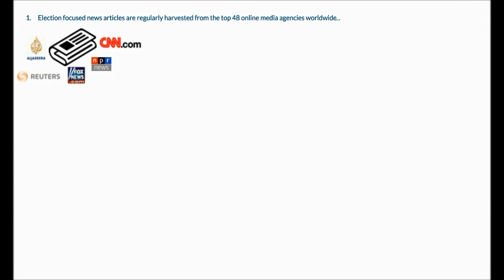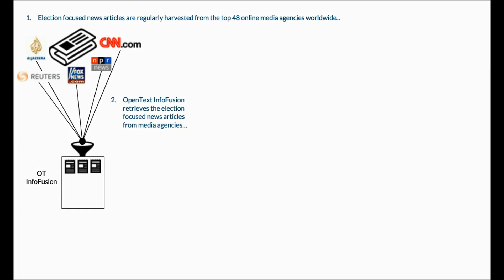Let's depict the flow of events — how does that progress? This diagram maps it out nicely. First, we decided on several sets of online media news agencies. We started with 48; that count is now above 50. We regularly crawl the web using OpenText InfoFusion, which is the mechanism that retrieves the election-focused news articles from the media agencies.